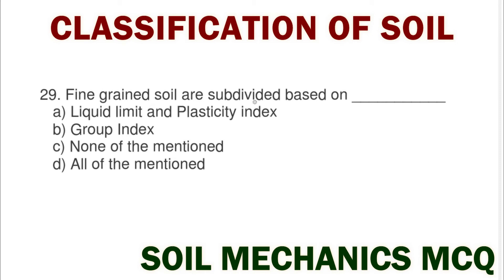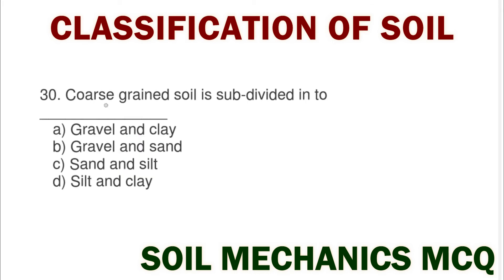Next question: fine grained soils are subdivided based on option A liquid limit and plasticity index, option B group index, option C all of mentioned, option D none of the above. The correct answer is liquid limit and plasticity index.